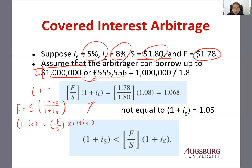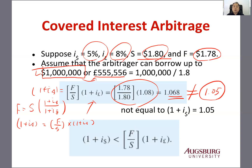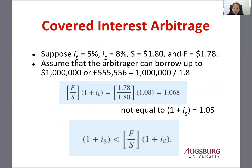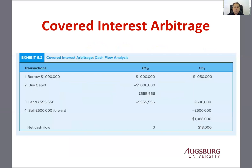So that should be (1 plus i-dollar). If you calculate this, it will be 1.6068, which is not equal to 1.05. So interest rate parity is violated, meaning the market interest rate is lower than the one implied by parity. With this condition, we can have an arbitrage opportunity.